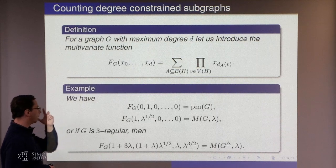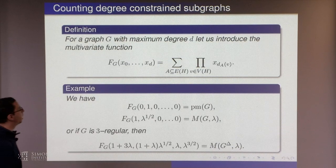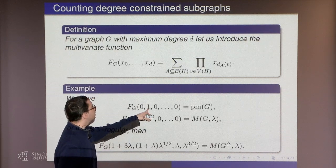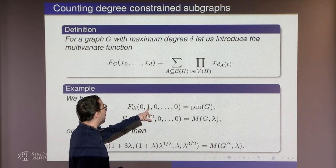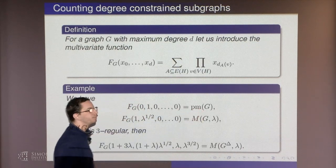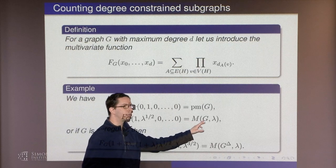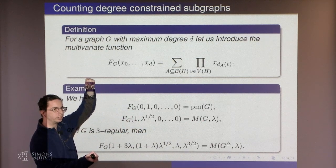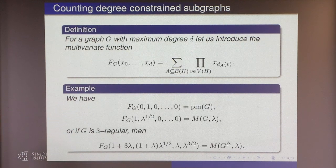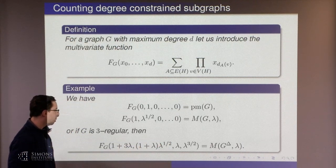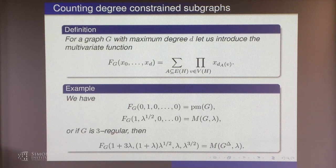This function computes many things we've seen. If we put 0 everywhere except a 1 at degree 1, we only consider subgraphs where each degree is 1 — perfect matchings. If we put 1 at degree 0 and sqrt(lambda) at degree 1, this gives M(G, lambda). The matching polynomial of the truncated graph is obtained by plugging in 1+3*lambda, 1+lambda*sqrt(lambda), lambda^(3/2), and so on.